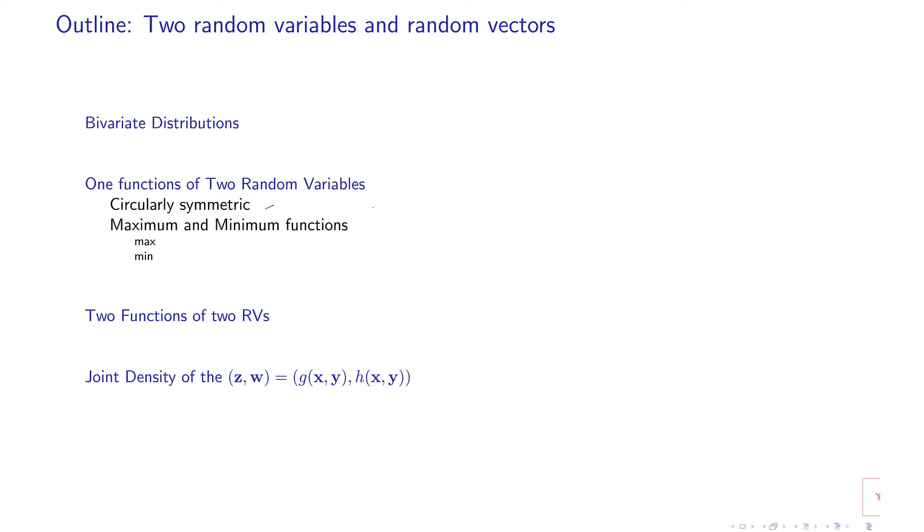We'll cover maximum and minimum functions of two random variables. Then we will define two functions of two random variables, and the objective here is to define the joint distributions of two functions of two random variables or one function of two random variables. We see that the second one is easier,